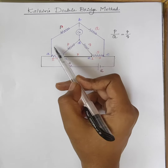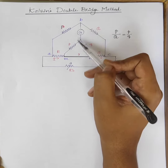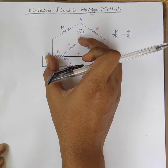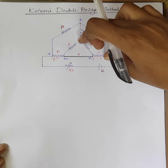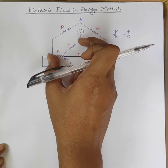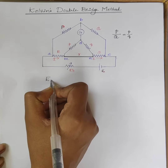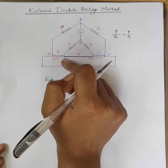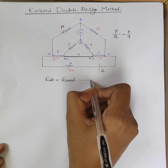Now we will derive the expression for unknown resistance R. We know that under the balanced condition, no current flows through the galvanometer. This means the voltage drop between A and B is equal to the voltage drop between A and D, or the voltage drop between B and C is equal to the voltage drop between D and C. Consider the first case: voltage drop between A and B is equal to voltage drop between A and D, written as EAB = EAMD. This is equation number 1.